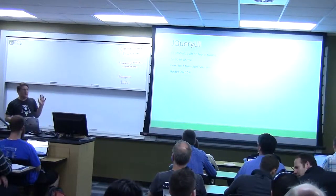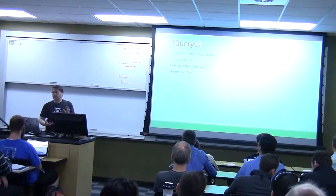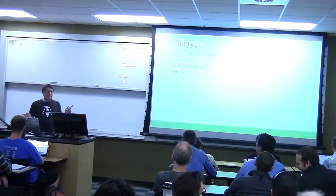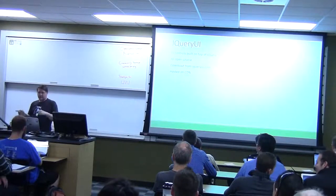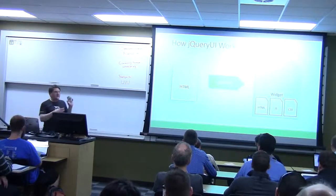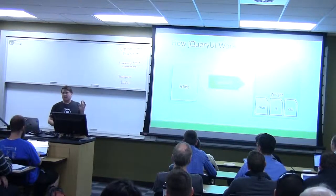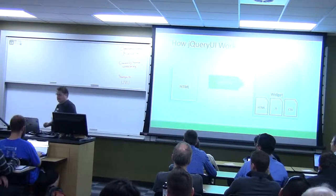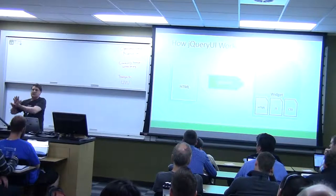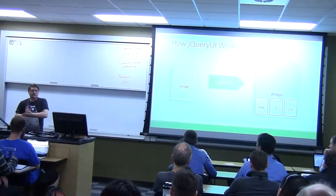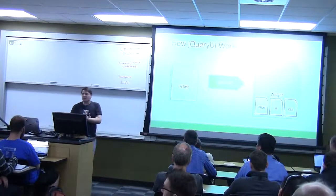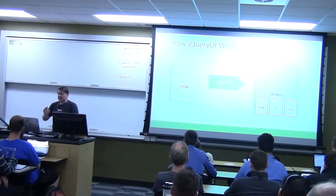jQuery UI is a bunch of UI widgets built on top of jQuery. It allows you to get some really cool effects in your web applications. Again, it's all open source. Go to jqueryui.com. It too is hosted on the CDN. How does this work? You write things in HTML that you want to happen for your web page. Then jQuery UI takes this stuff when your page loads and runs it through the jQuery UI factory, which you don't ever have to worry about unless you're going to write your own plugins. You don't worry about the factory. It just happens.